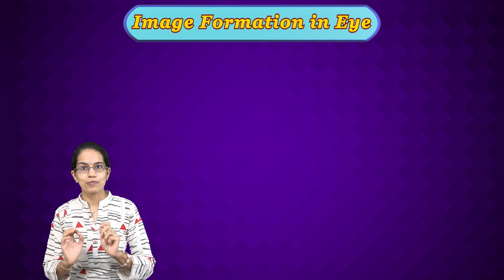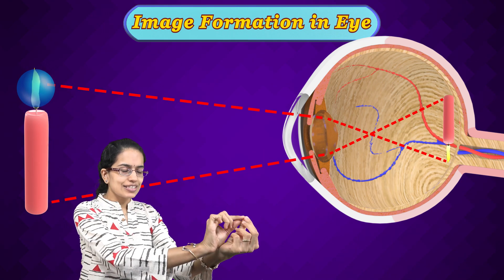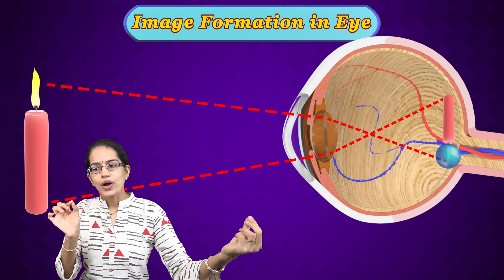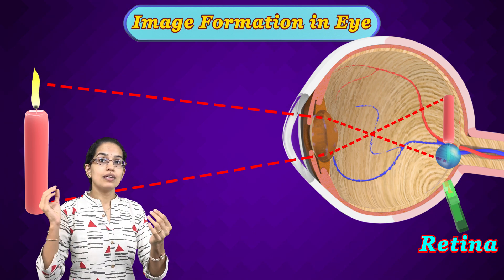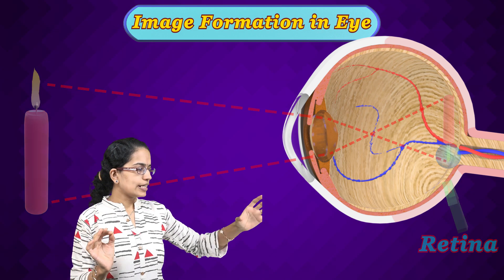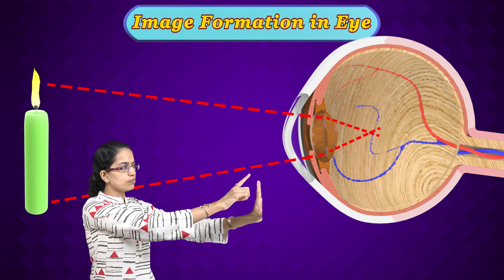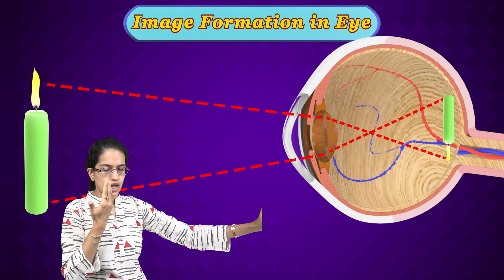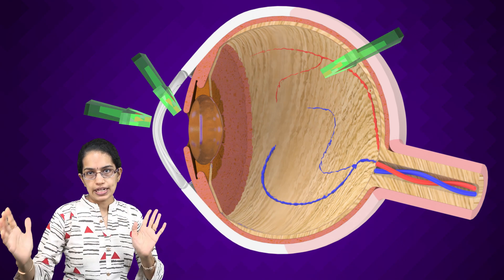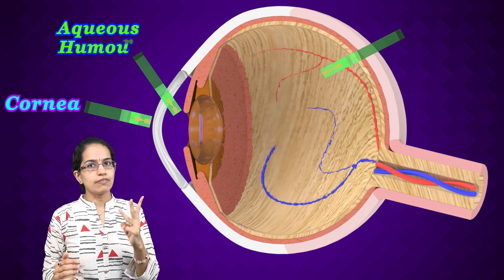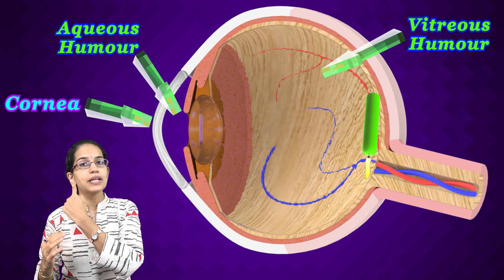Understanding how image formation takes place in the eye: a point of light on the object forms a point of light on the retina. As we have already discussed the structure of the eye, image formation takes place at the retina. Consider a candle — light rays fall from the candle and are transmitted to the eye. In this process, three elements in the eye refract the light: the cornea, aqueous humor, and vitreous humor, after which the image forms on the retina.